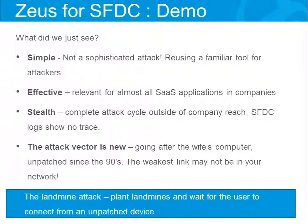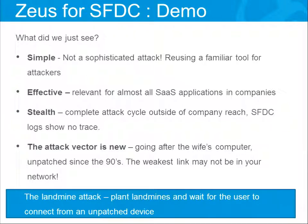This complete attack cycle went behind the eyes of even the most protected organizations — even in the Salesforce logs. We work with many companies and almost none of them actually knows what's going on in the logs. But even in the logs, you can't see any trace of this event. The attack vector is new: they attacked the wife's computer. Once you understand that the weakest link in your organization might not be inside your organization, it becomes very hard to protect it. My SaaS organization has many devices, most of them unpatched, and I can never be sure that none of my users accessed it from a compromised device.